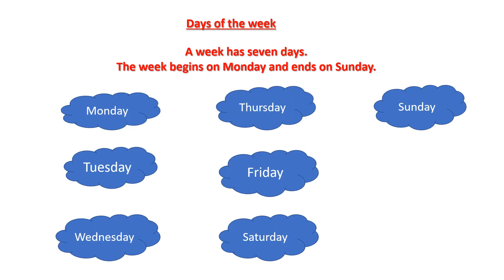Days of the week. A week has seven days. The week begins on Monday — the first day is Monday — and it ends on Sunday, the last day. You can see the day's names: first Monday, second Tuesday, third Wednesday, fourth Thursday, fifth Friday, sixth Saturday, and the seventh day of the week is Sunday.